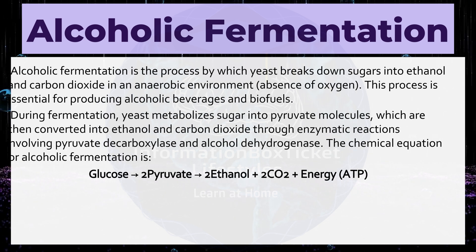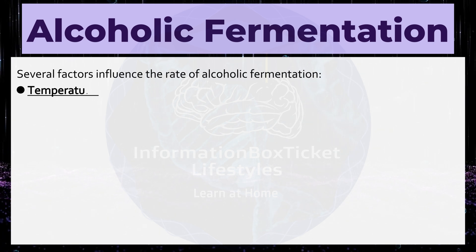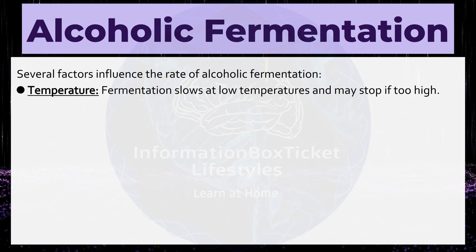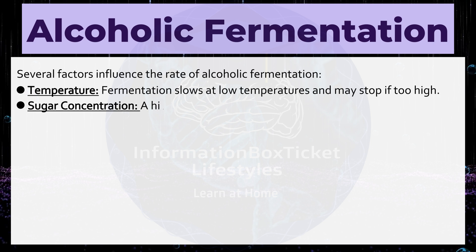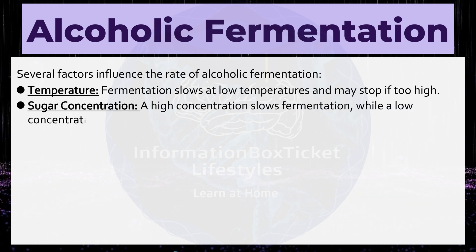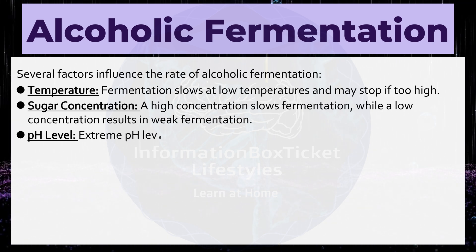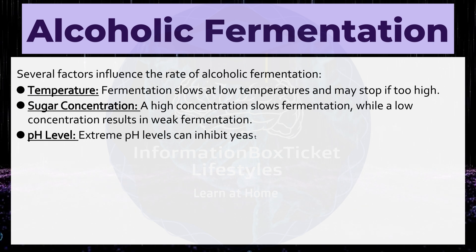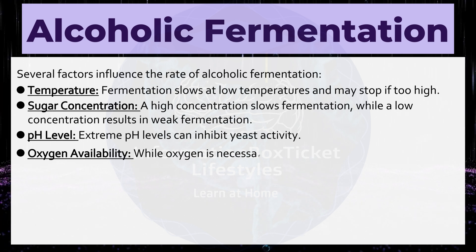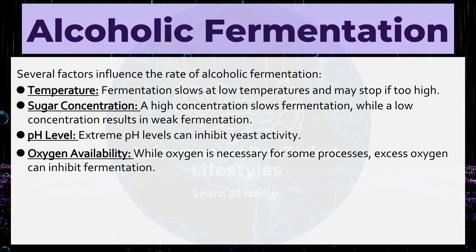Several factors influence the rate of alcoholic fermentation. Temperature: fermentation slows at low temperatures and may stop if too high. Sugar concentration: a high concentration slows fermentation, while a low concentration results in weak fermentation. pH level: extreme pH levels can inhibit yeast activity. Oxygen availability: while oxygen is necessary for some processes, excess oxygen can inhibit fermentation.